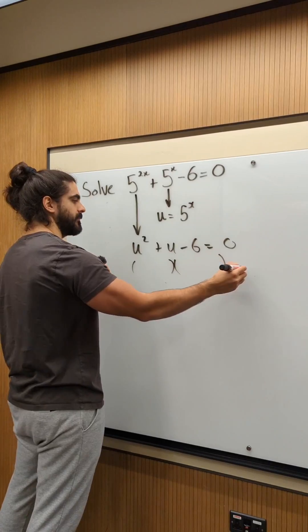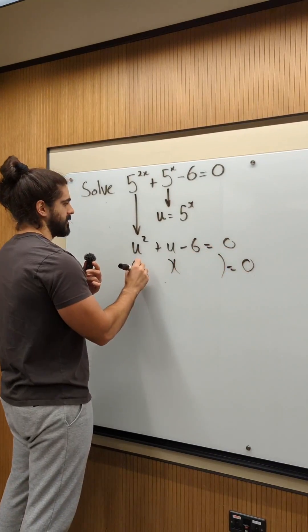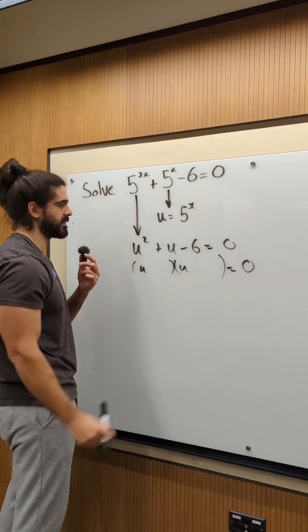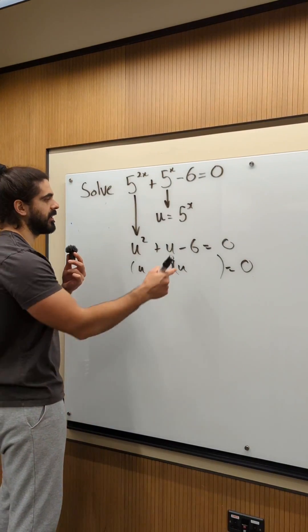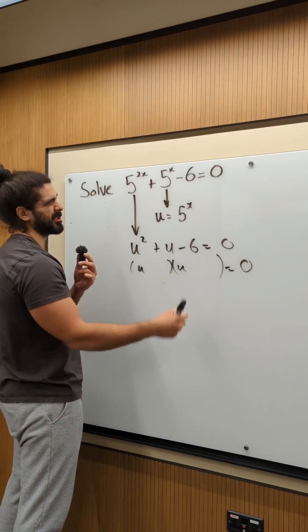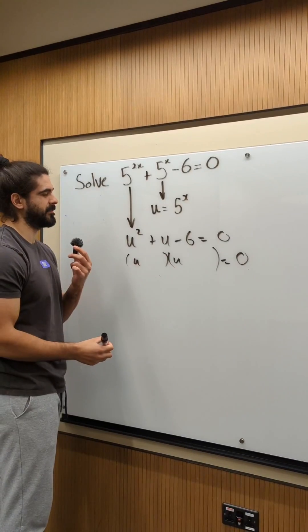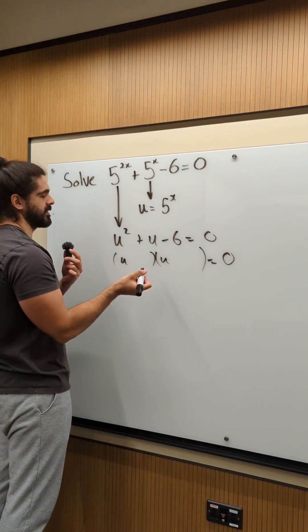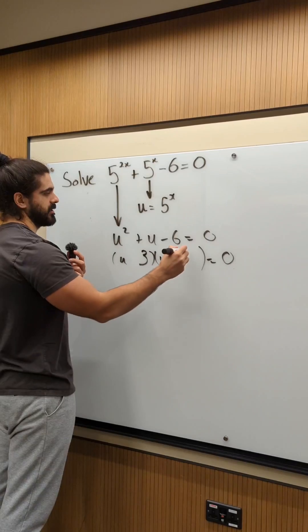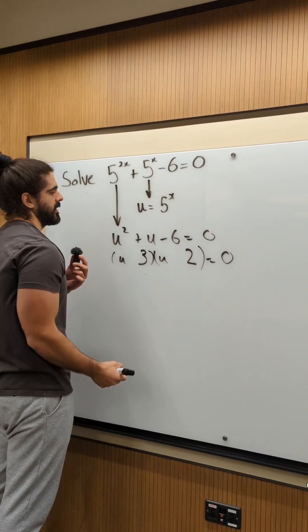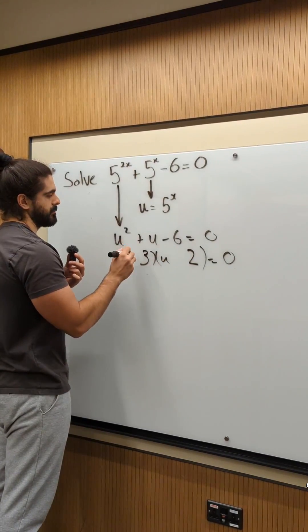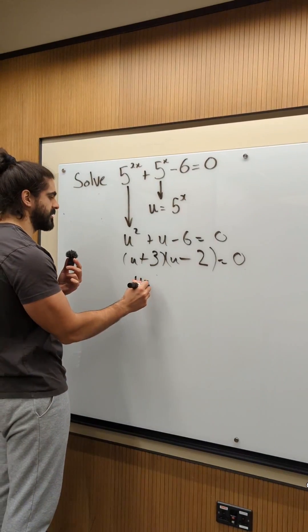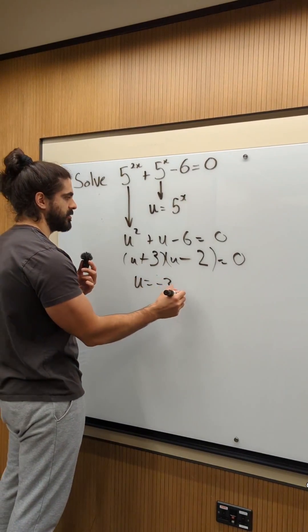Factorize. This one with 6 and 1, you have to be careful — it's minus 6, so I think it's going to have to be 3 and 2. And then plus 3, minus 2. So, u is minus 3 or u is 2.